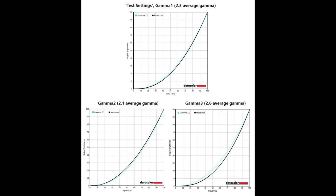Looking at gamma tracking in more detail: my test setting using Gamma 1 shows a little variation mainly for some mid-tones but doesn't stray too far from the 2.2 curve, and it's pretty close for dark and bright shades. Gamma 2 gives a lower average of 2.1, and Gamma 3 gives a much higher average of 2.6. If you want to lift visibility and have a lighter look try Gamma 2; for a deeper look try Gamma 3. I recommend Gamma 1.